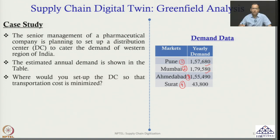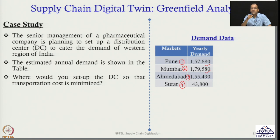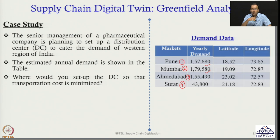The objective is to set up the DC so that transportation cost is minimized. The question is: where should I set up this DC — near Pune, Mumbai, Ahmedabad, Surat, or somewhere else — so that the overall transportation cost is minimized? To approach this problem, first I need to get the exact location of my customers.